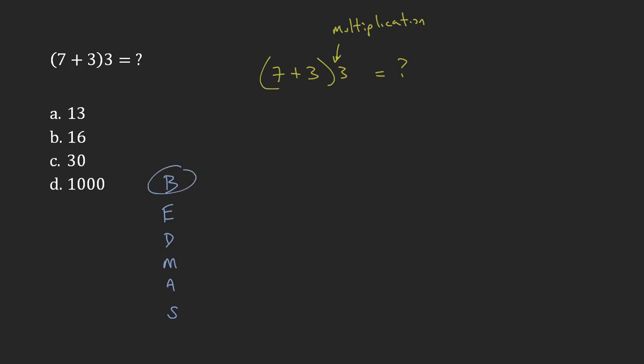So in my brackets I have 7 plus 3. 7 plus 3 is 10. So this is going to be 10 times 3. And 10 times 3 is just 30.